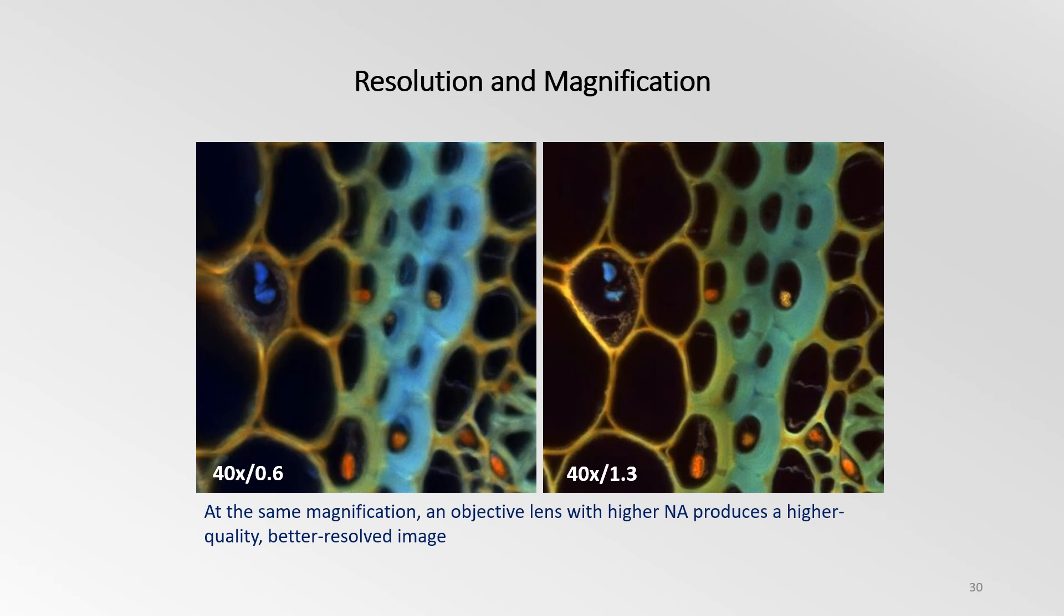If you had to choose between two different objectives that give the same field of view, which one would you pick? A 40x 0.6 NA or a 40x 1.3 NA objective?